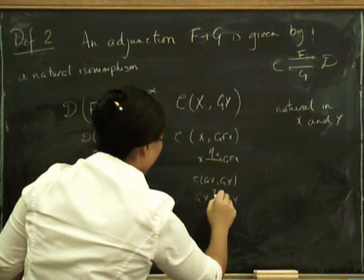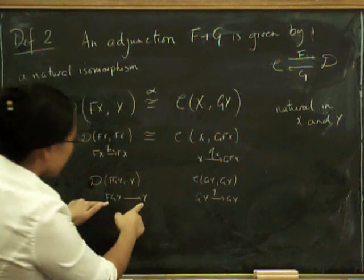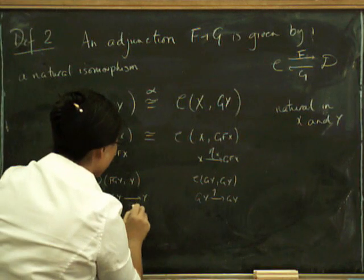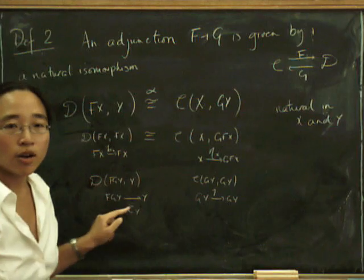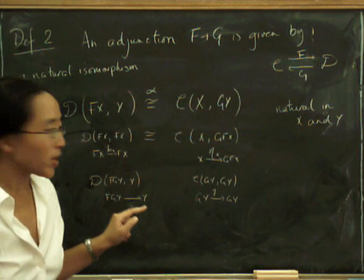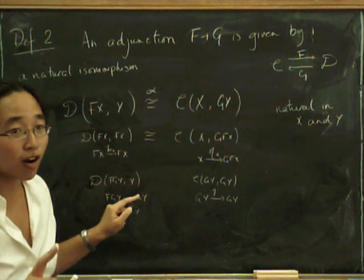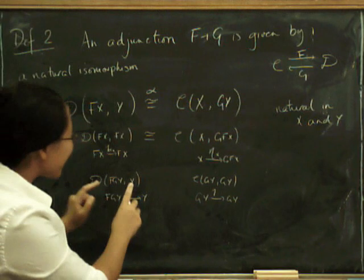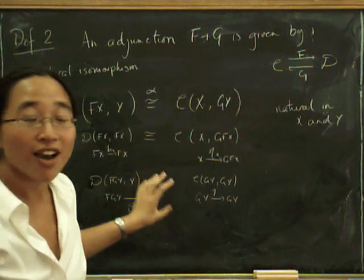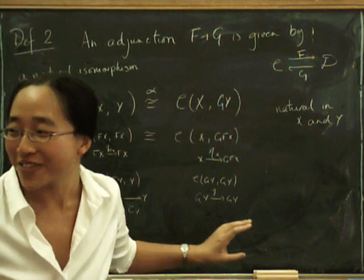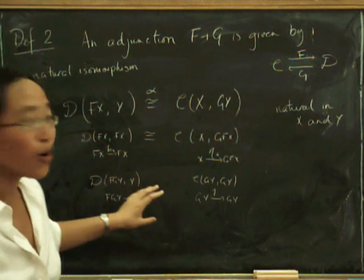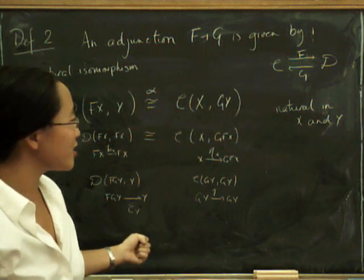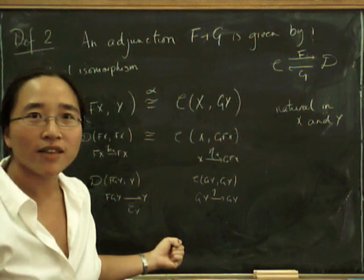What we're going to have to do next time is... I can see this clock counting down. I've only got 30 seconds left which means next time we have to show first of all that these really are natural transformations, and moreover not only are they natural transformations but that they satisfy the triangle identities. And that's going to be so much fun that we have to leave until next time.